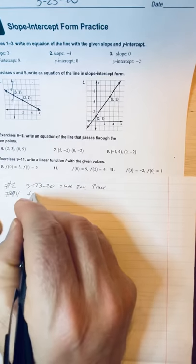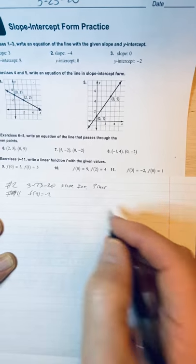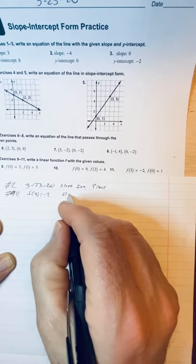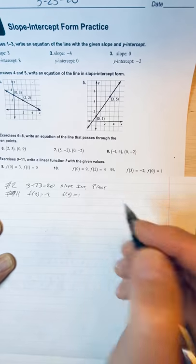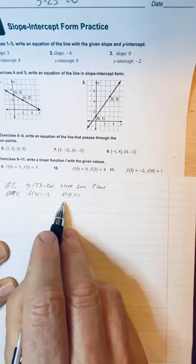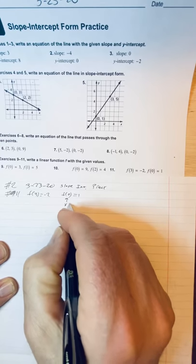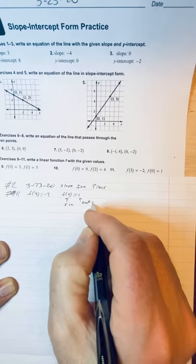And so, we say that I've got f of 3 equals negative 2, and then f of 0 equals 1. So, this is a function. My input value I put in, my x is always my input value, and this is my output, and that's why I've been calling it y.